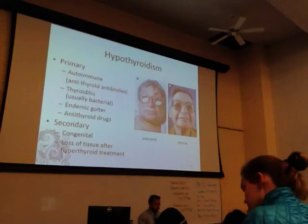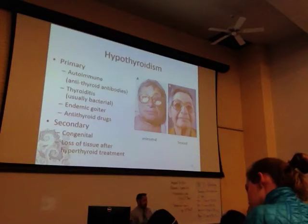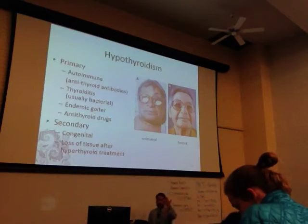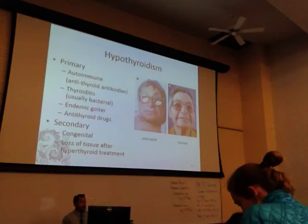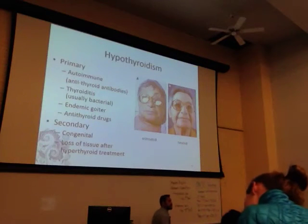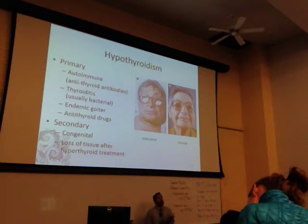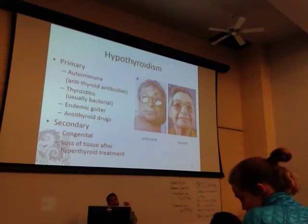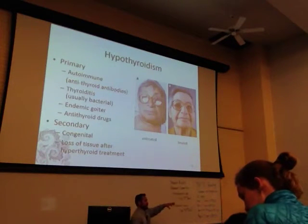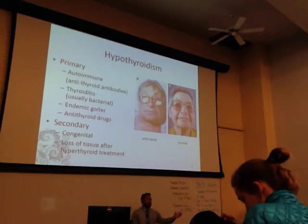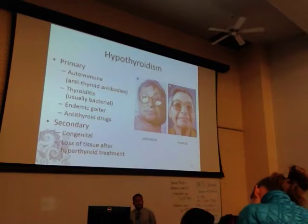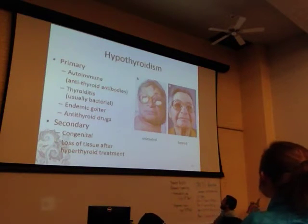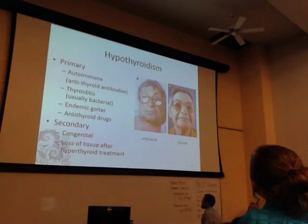Hypothyroidism is the most common type of thyroid malfunction — too little thyroid hormone. If you overdo thyrostatic drugs like carbimazole, you can take a person from hyper to hypo. Congenital effects where the thyroid doesn't form correctly, and surgical removal of too much healthy thyroid tissue, are also secondary causes of hypothyroidism.